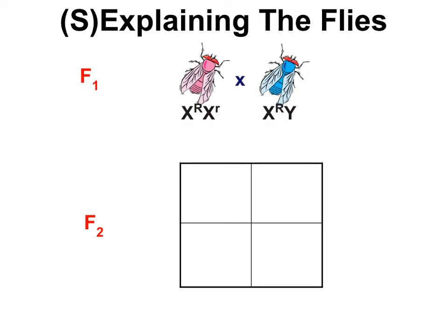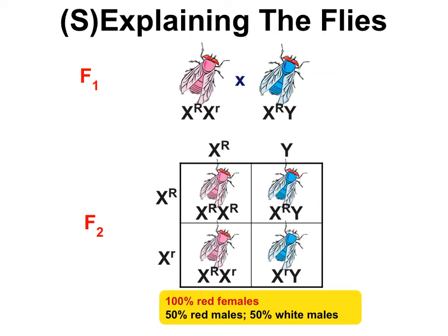If you take one of each of those F1 flies and cross them, females can be X-big-R X-big-R or X-big-R X-little-r — in both cases they'd have red eyes. Males can be X-big-R Y with red eyes or X-little-r Y with white eyes, giving a 50-50 ratio. Using Punnett squares and thinking about them this way was revolutionary and required a lot of imagination for Thomas Hunt Morgan to sort out.